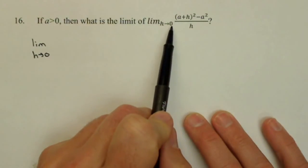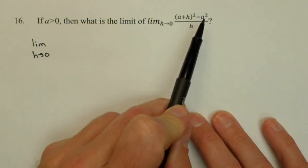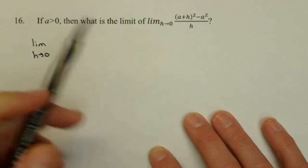Notice what happens if I plug in 0 immediately. Both h's become 0 and I get a squared minus a squared which is 0 over 0, which is an indeterminate form.